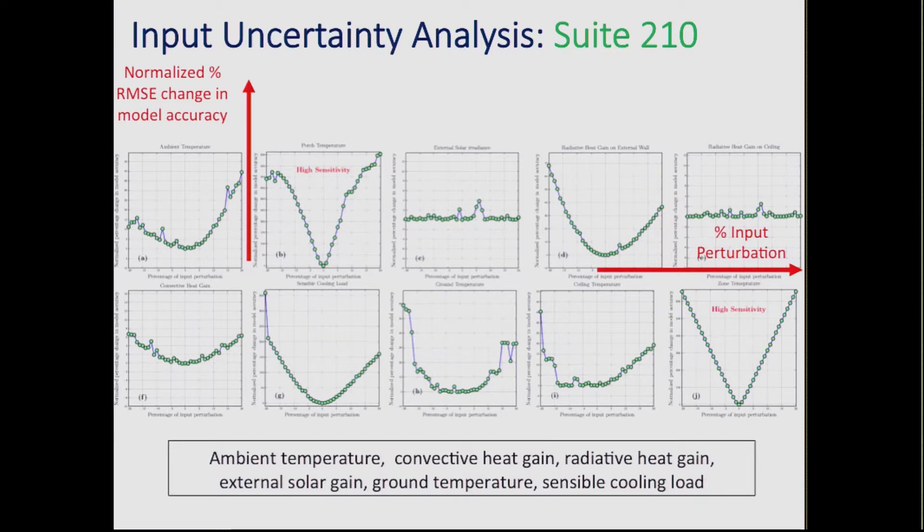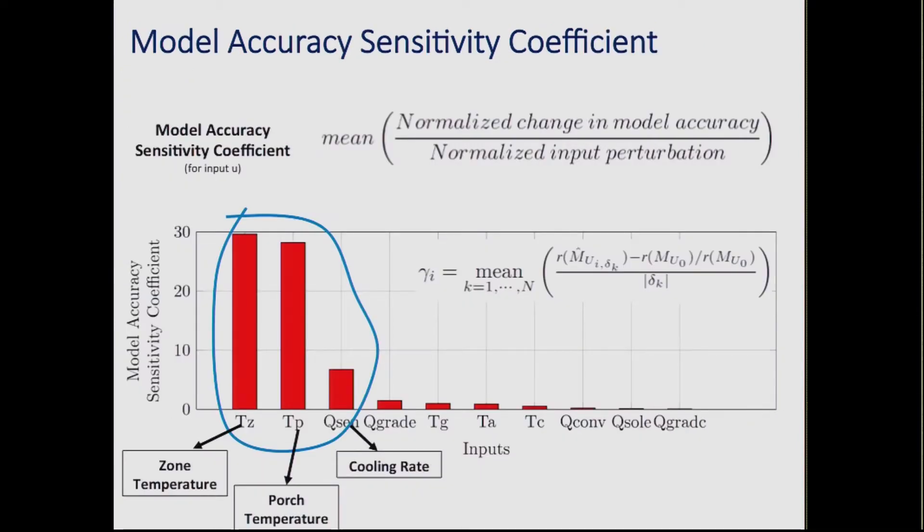But the second is that the decrease in accuracy is not same for all the different inputs. Some inputs are affecting the accuracy the most compared to other inputs. And that's really what we were trying to capture. So it would be very nice if we can get all this information and come up with a single number, which can rank these inputs in terms of how much they affect accuracy of the model. And that's what is called a model accuracy sensitivity coefficient. It's just a simple ratio of what's the average change in the accuracy to that of the magnitude of the perturbation that you added. So for this particular zone, it turns out, although you can measure 10 different things in your model structure, really, these top three things will affect the accuracy the most. So you should focus on adding sensors to get accurate measurements of these different inputs, as opposed to maybe the convective heat gain or some radiative heat gain.